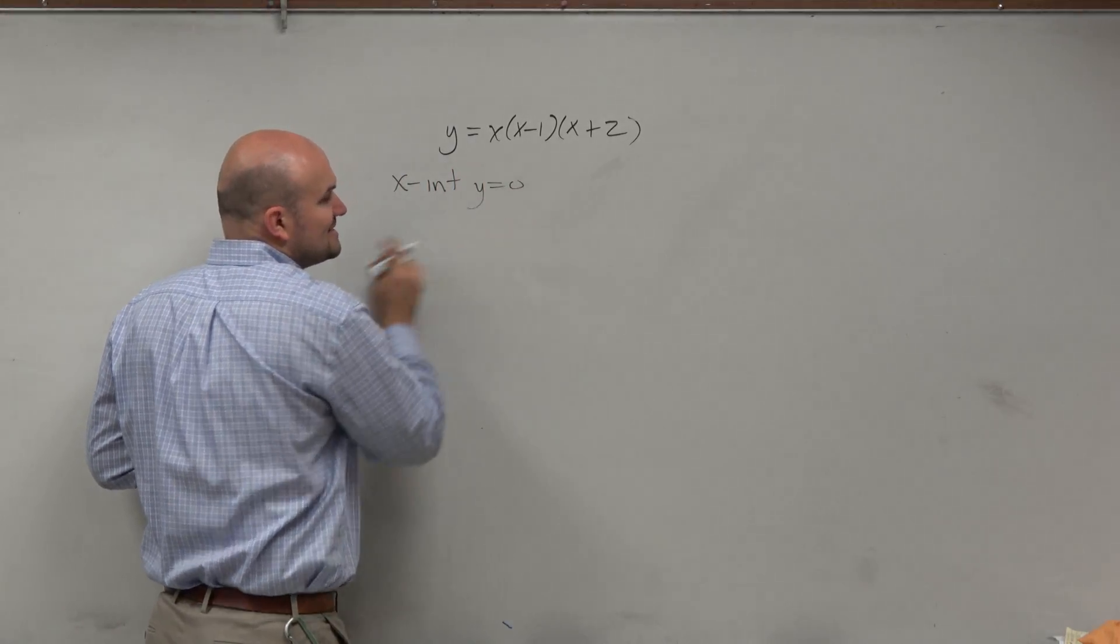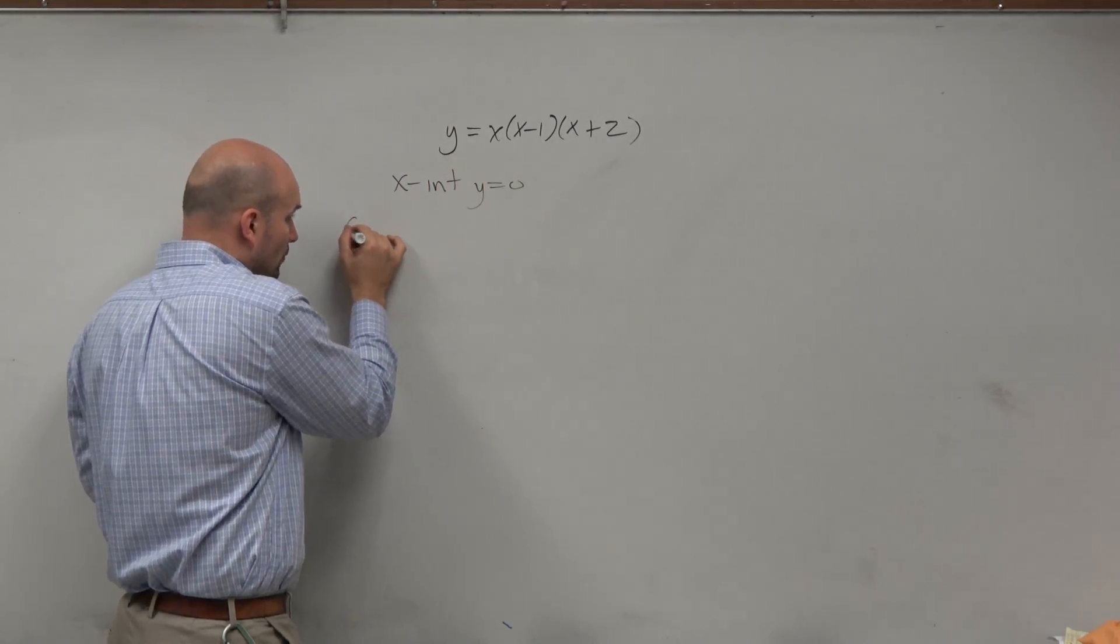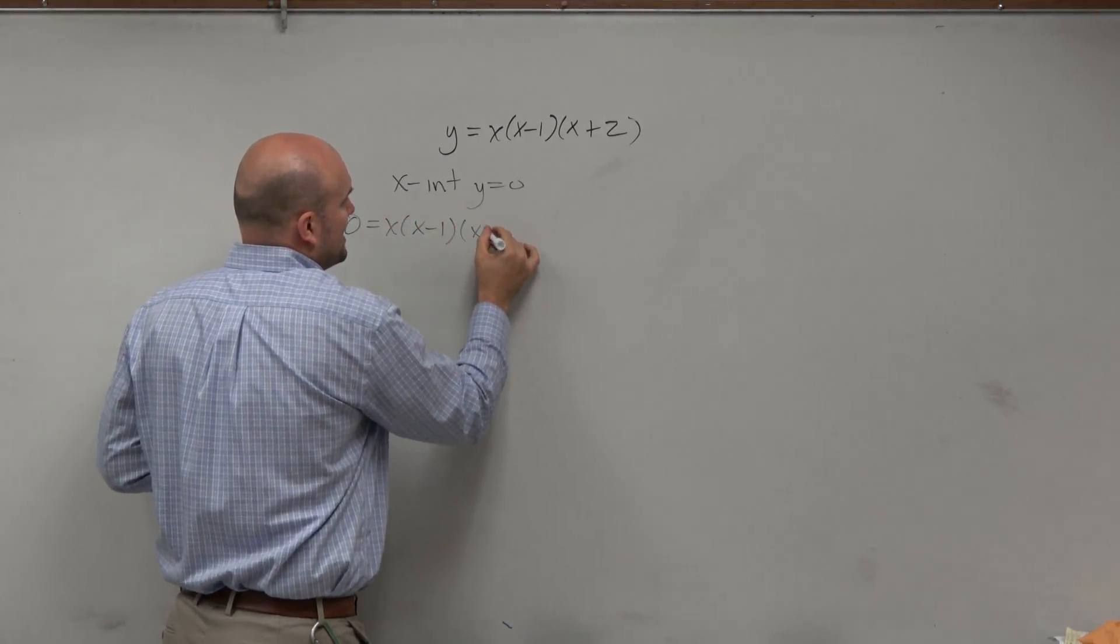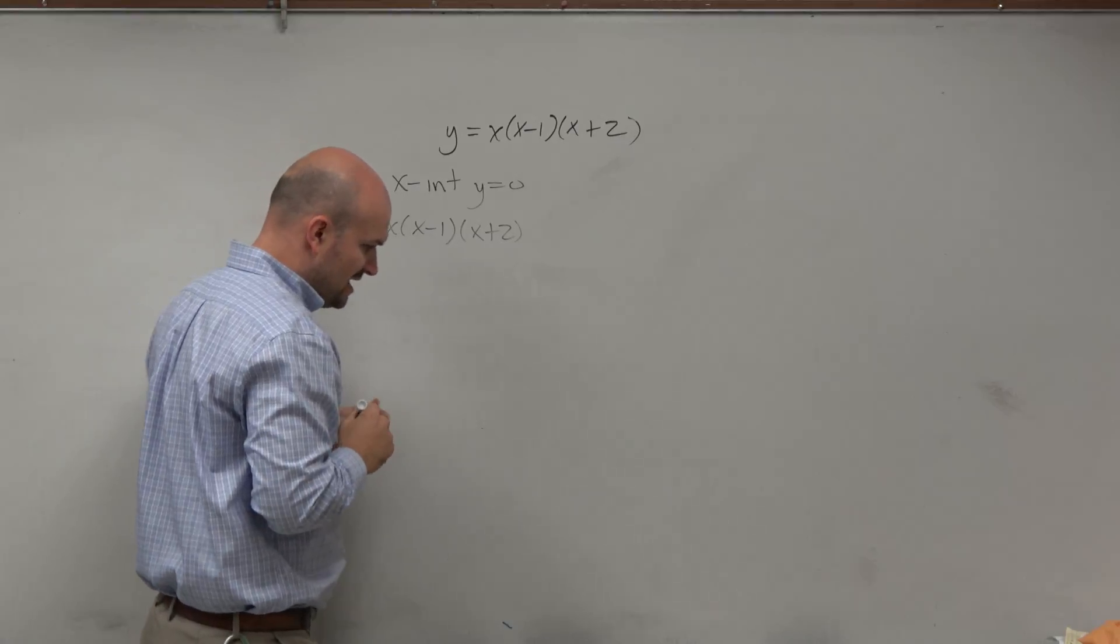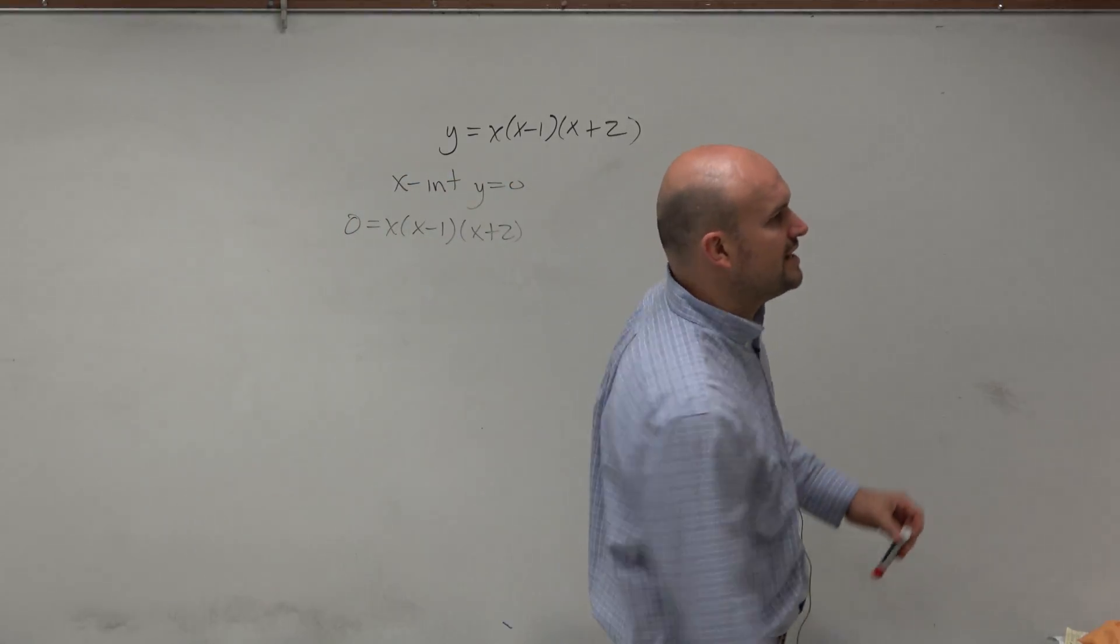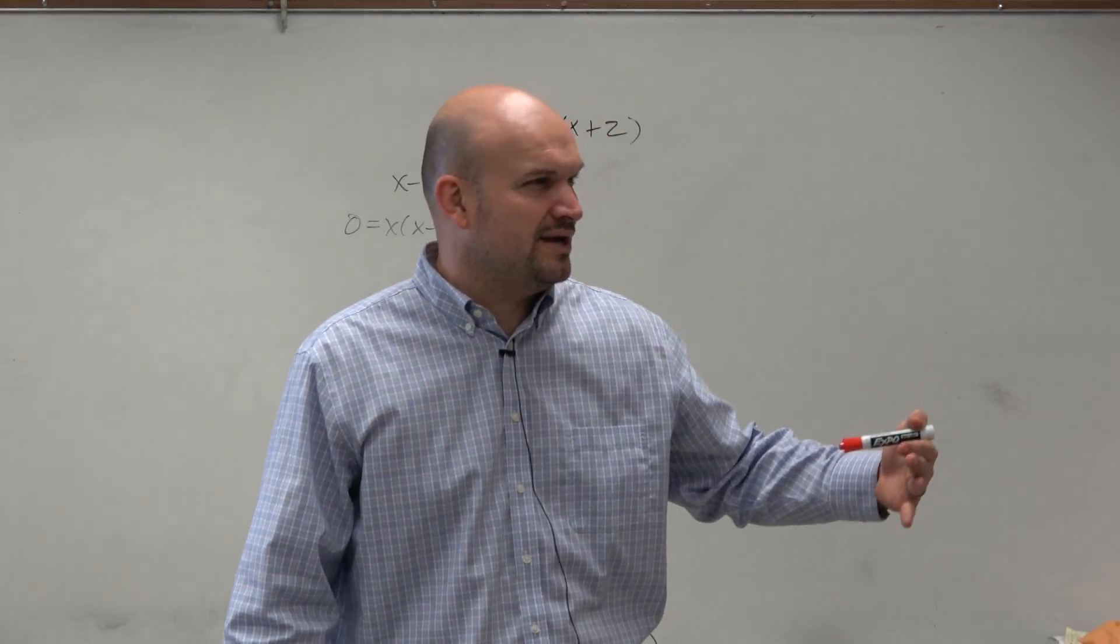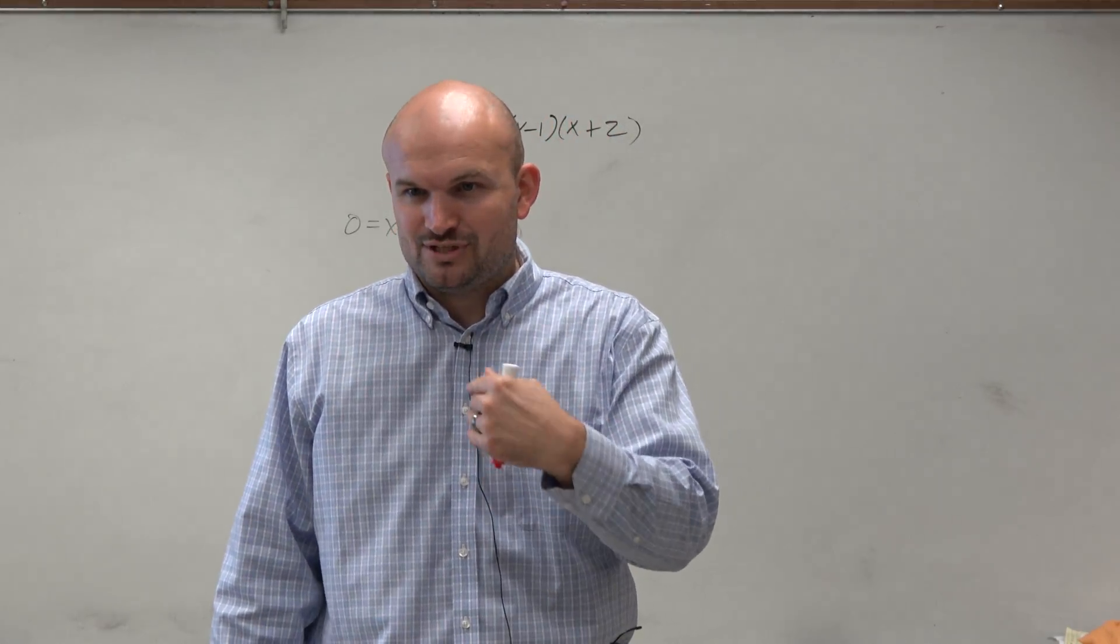x-intercept y is equal to 0. So we set y equal to 0, and then we have x times x minus 1 times x plus 2. Now, this kind of brings up something interesting that hopefully you guys remember. What property do we want to apply when we have a product equal to 0?